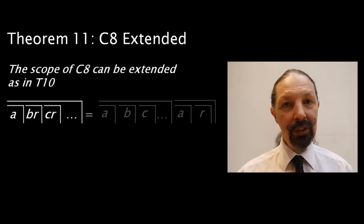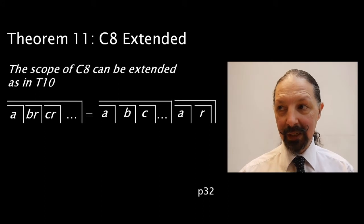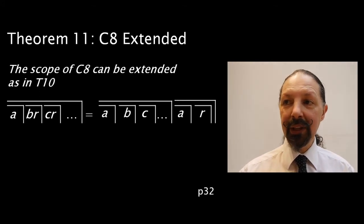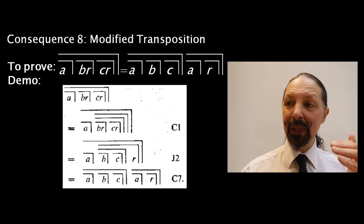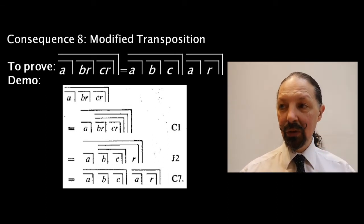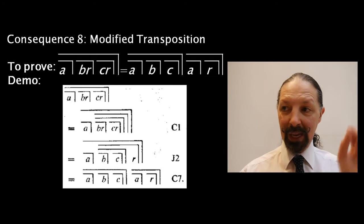Theorem 11 shows that the scope of C8 can be extended. Now, if you remember, this was the proof of C8. You can see where C1 has been applied. You can see where J2 has been applied. Hopefully, you move the R term out.